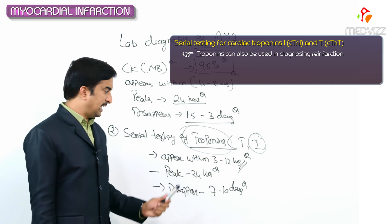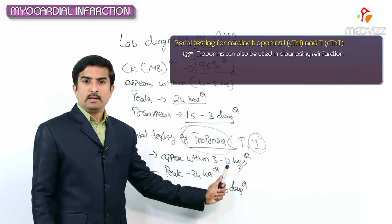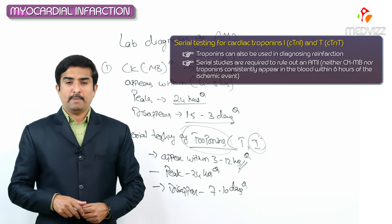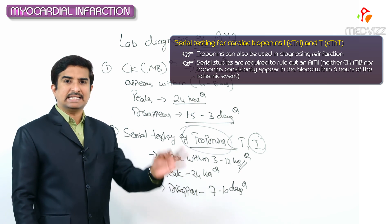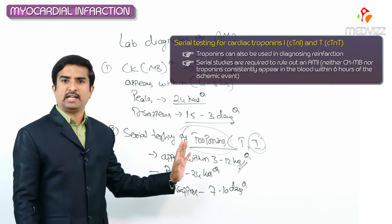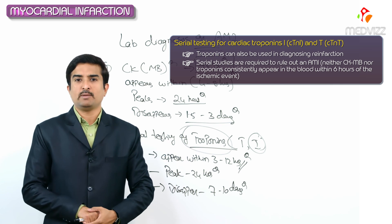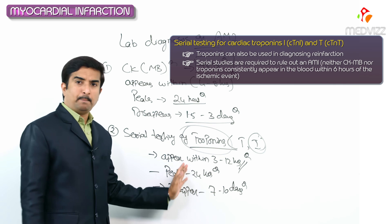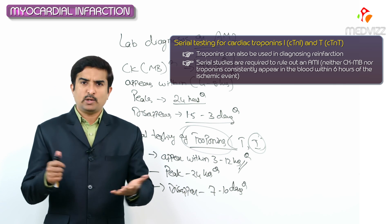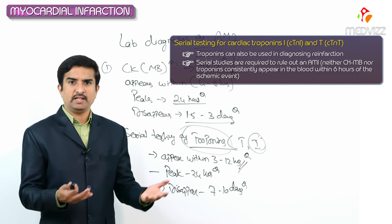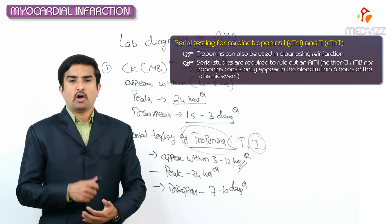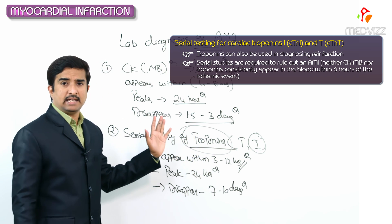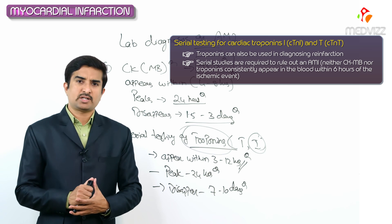In practice, troponins are primarily used for diagnosis of acute myocardial infarction. However, irrespective of the time frames mentioned, neither CKMB nor troponins consistently appear in the blood within six hours of the ischemic event, so serial studies are continuously required to rule out acute myocardial infarction. When comparing tests, the best immediate test is the ECG, which can be obtained right away; CKMB and troponins are used a couple of hours later for confirmation.